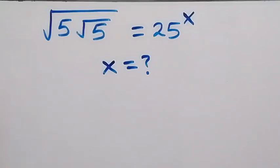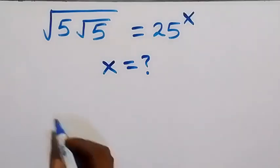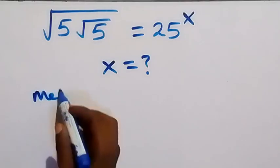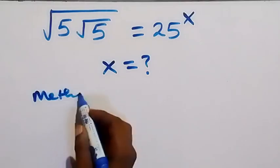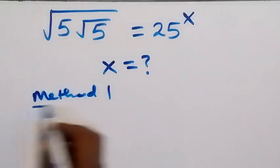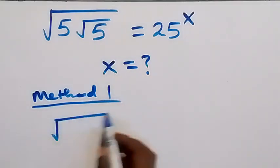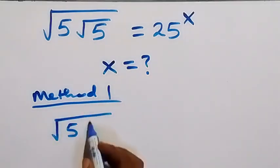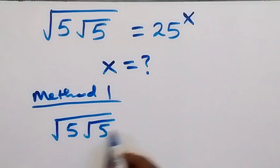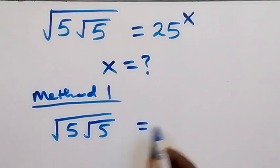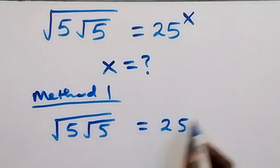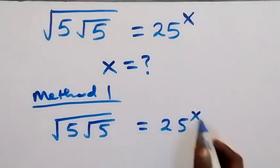Hello, you are welcome here. How to solve this nice algebra problem involving roots. The first method — method one — from here let's square both sides. We have square root of five; the inside we still have square root of five, which equals 25 raised to power x.